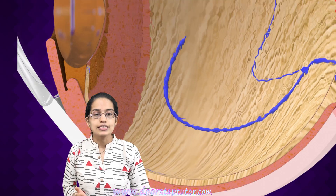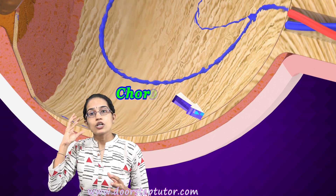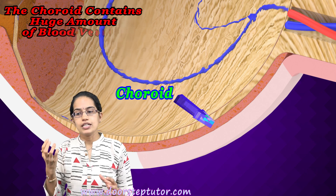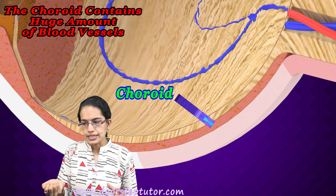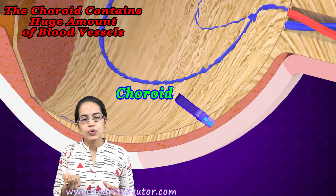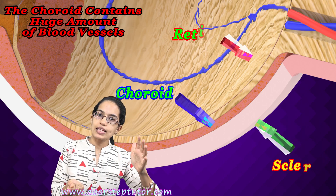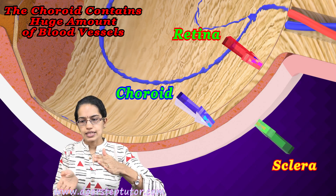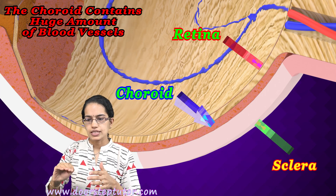The next important thing we understand is the choroid. The choroid is a layer which has a huge amount of blood vessels present. It lies between the sclera and the retina — so between the sclera and the retina you have the choroid.